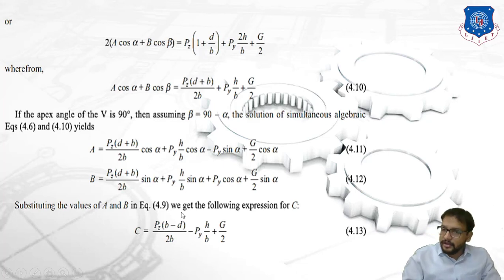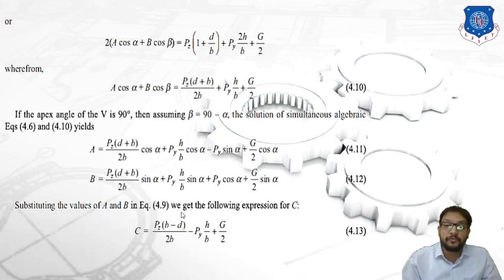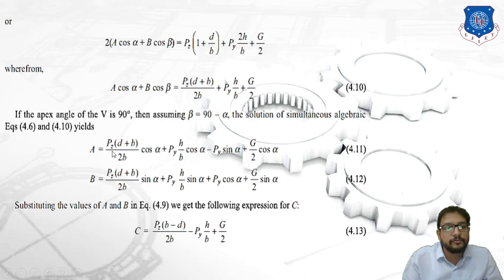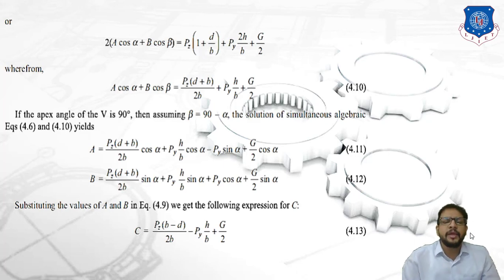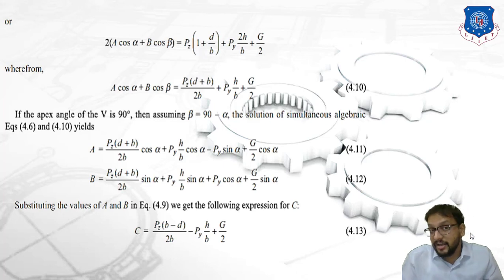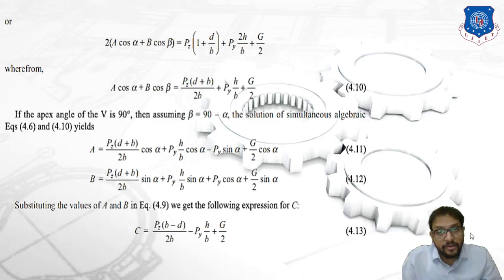With this, we have completed the derivation of forces acting on a combination of V and flat slide ways. In today's session we have found the three normal forces A, B, and C. In the next session, we are going to determine the forces acting on slide ways with a combination of two flat surfaces. Till then, stay tuned — thank you all.